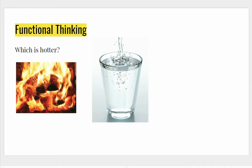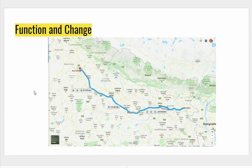Another example: which is hotter? You have two pictures — one is fire logs burning and the other is a glass of cool water. Looking at the picture, you can say the one on the left would be hotter. So we are trained to always guess by looking at what we have, and in calculus we call that a function.